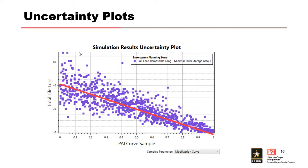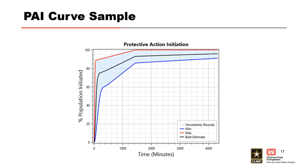Keep in mind that the uncertainty bounds for PAI curve sampling will always be 0 to 1. When we sample a PAI curve, we're working within a triangular distribution: a best-case red line at the top, a worst-case blue line at the bottom, and the most likely black line in the middle. When I sample a value near 0 on that axis, I'm sampling a function closer to the blue worst-case line — so life loss is higher. When I sample near 1, I'm closer to the red best-case line. This is something a lot of people have questions about when first working in LifeSim.